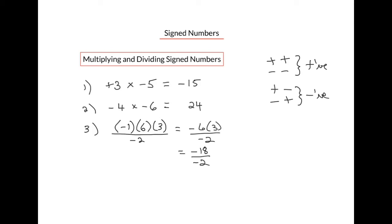We'll bring back the negative 2. Finally, we divide negative 18 by negative 2. The signs are the same, so the answer will be positive. Negative 18 divided by negative 2 is positive 9, and we can remove the positive sign.